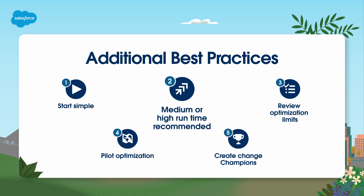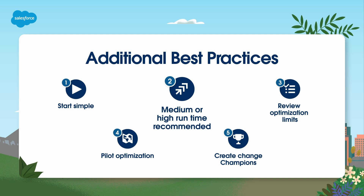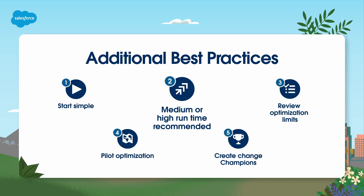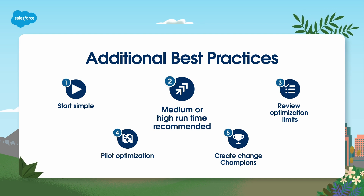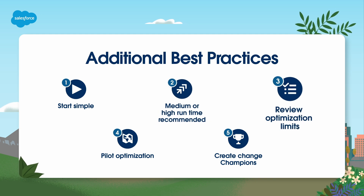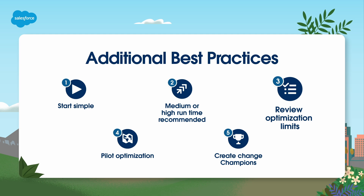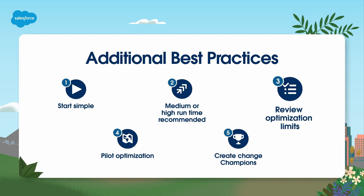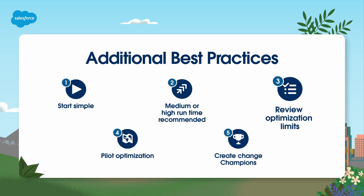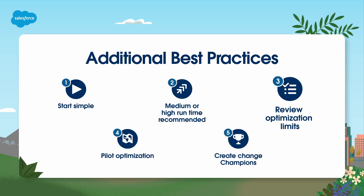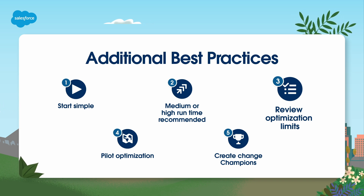Remember, the higher you set your runtime per service appointment, the more time the optimization engine has to achieve the highest results. If at all possible for your business, we recommend a medium or high runtime setting. Review the optimization limits help article linked here as you prepare and plan optimization for your org. Keep these limits in mind as you structure your jobs and select the number of territories to include as well as the horizon for your requests, as these decisions ultimately determine much of the data domain required to execute each optimization request.